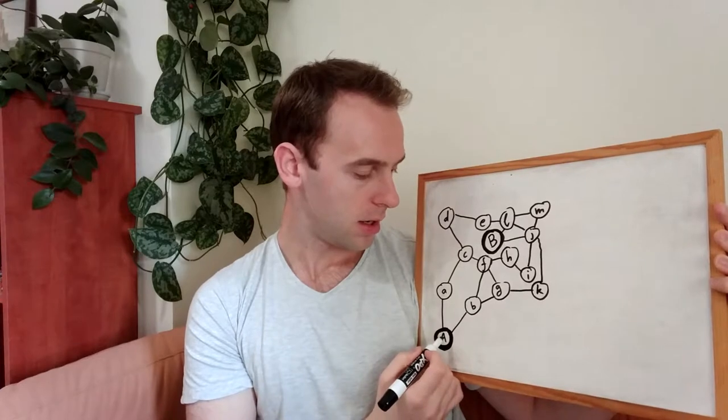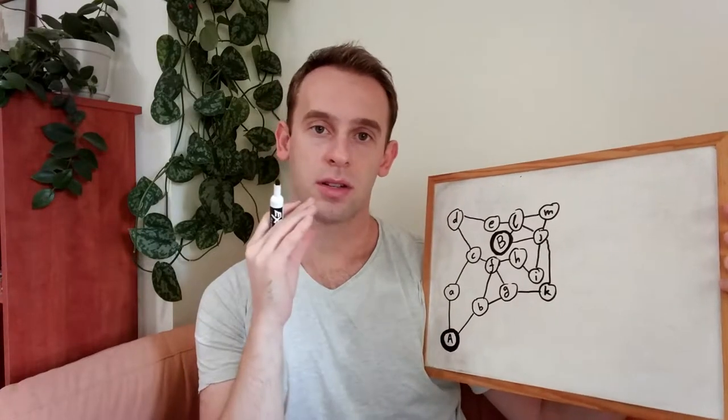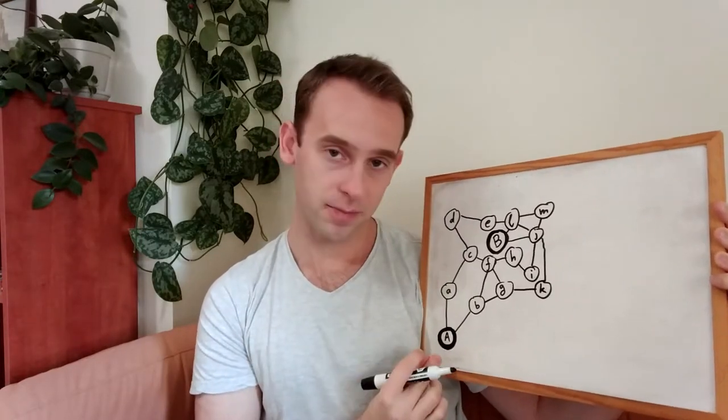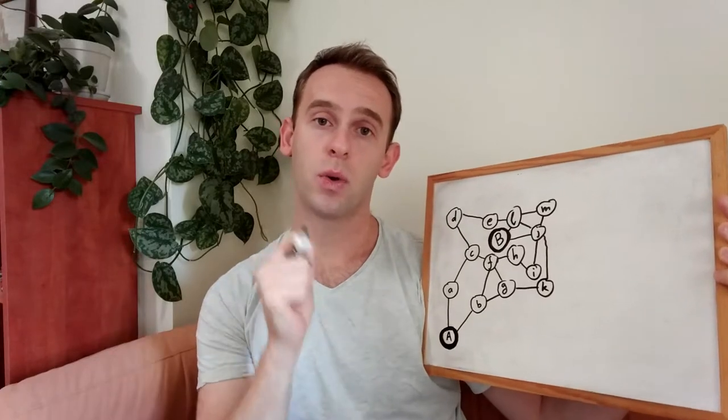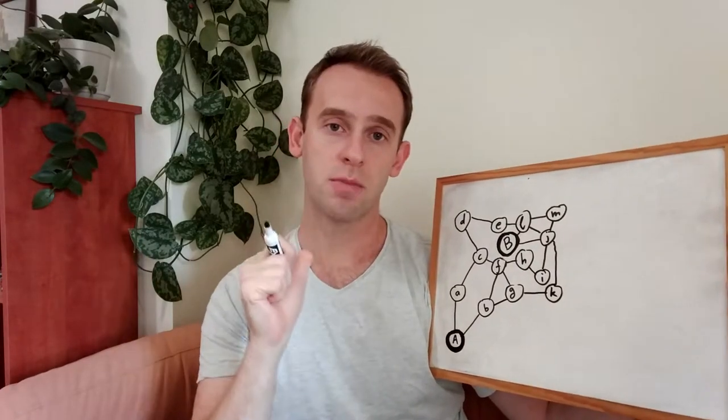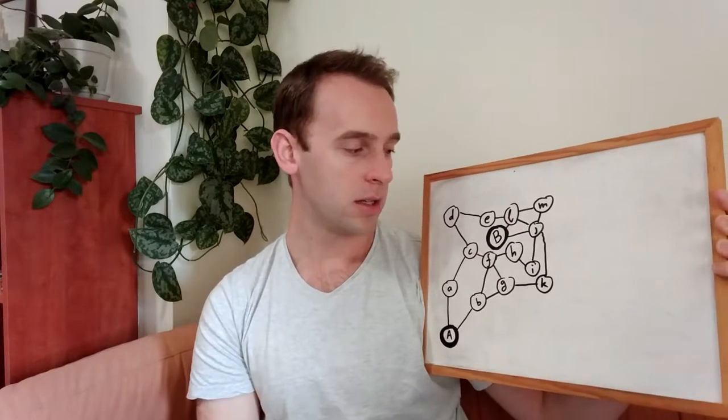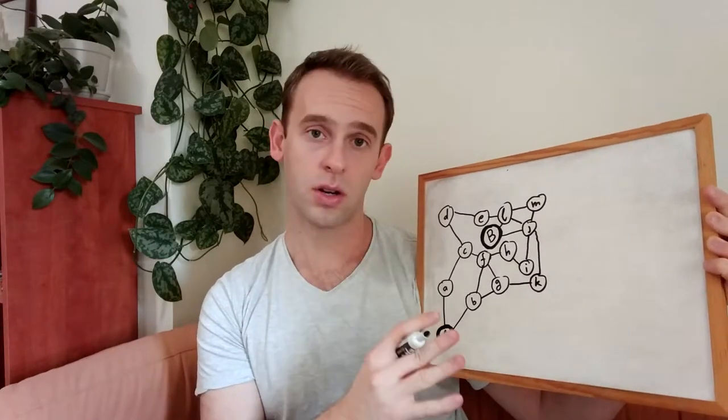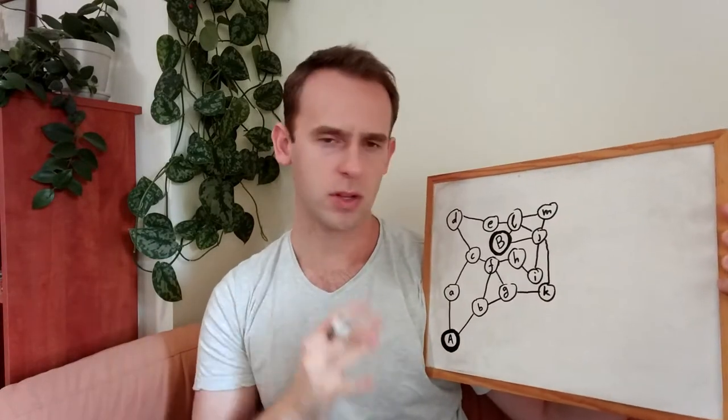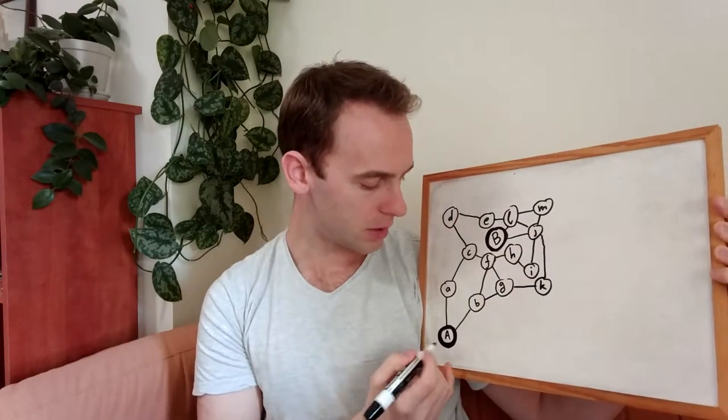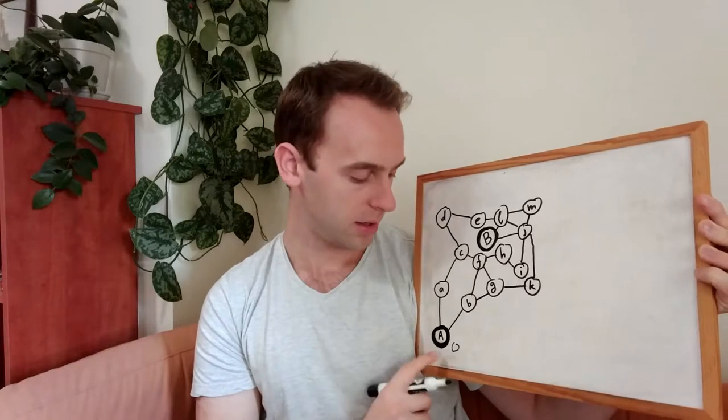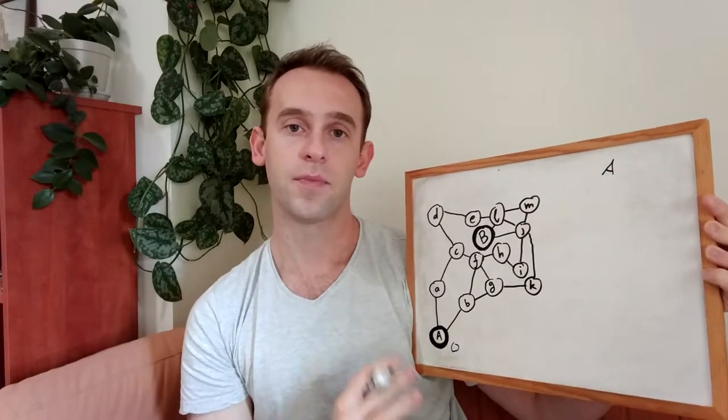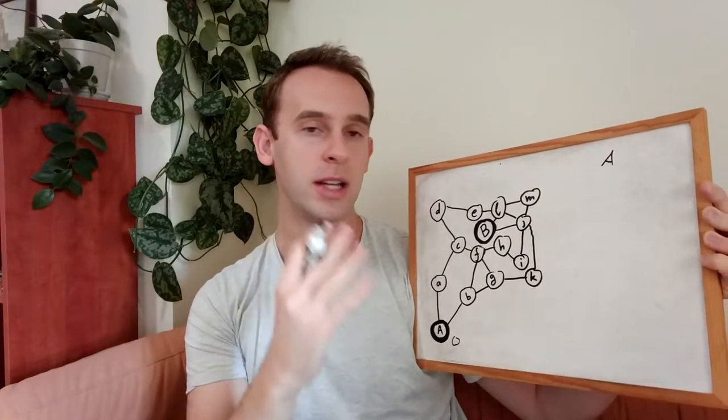So how does the algorithm work? Well, first of all, every node will have a few things that you will remember. He will remember the shortest path from A. He will remember how he got that number, which neighbor gave him that number. And we will also keep track of all the nodes that we saw and didn't yet update their neighbors.